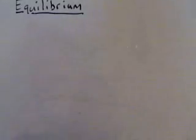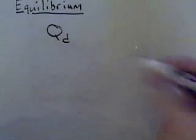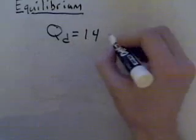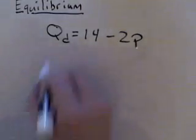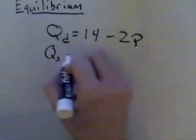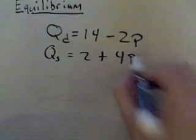So let's say that we're given a problem that says our quantity demanded, usually shown with a QD, is equal to 14 minus 2 times the price. And our quantity supplied is equal to 2 plus 4 times the price.